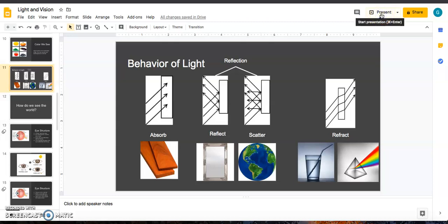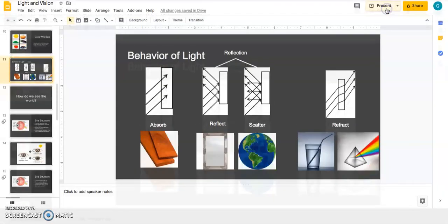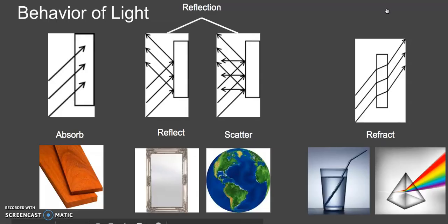I ended the last lecture talking about how we see a lemon as yellow because that is the wavelength of light that is reflected off of a lemon. We're going to start off this half of the lecture by talking about exactly what that means and then what other behaviors of light can be.